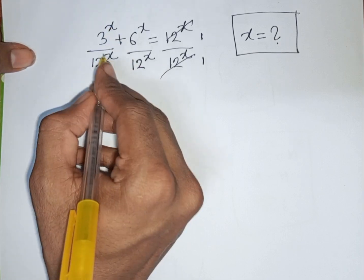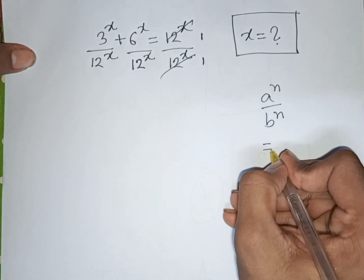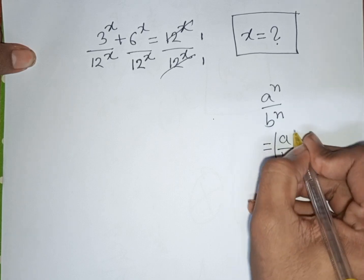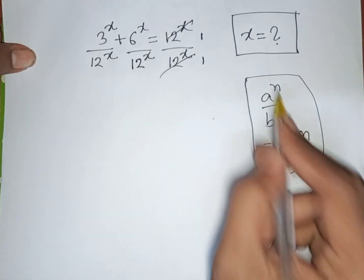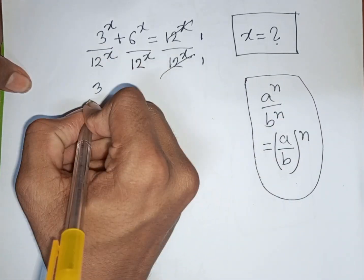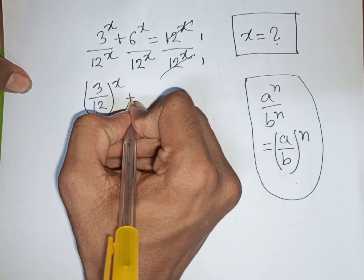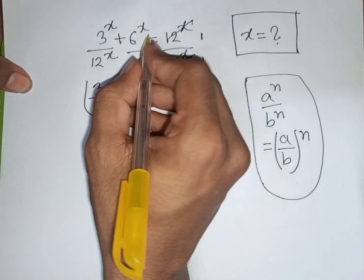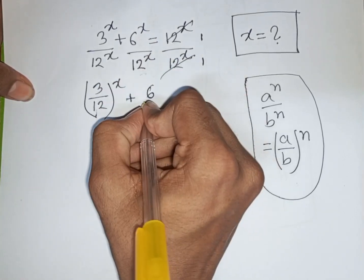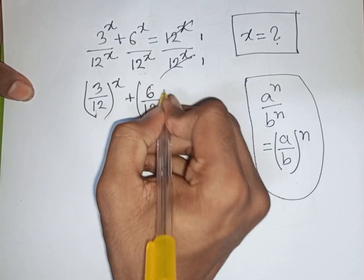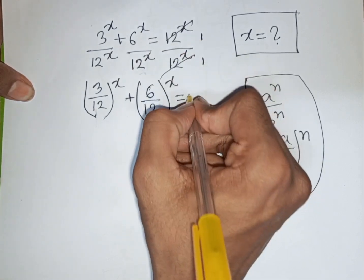Now we see the same power x but different bases. According to the exponential rule, a^n · b^n = (a · b)^n. Using this rule, we can write (3/12)^x + (6/12)^x = 1.